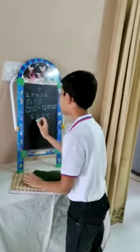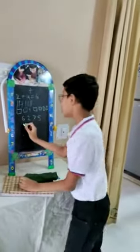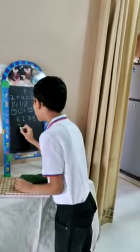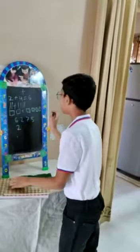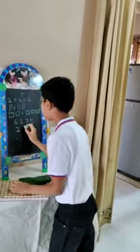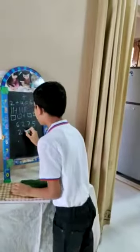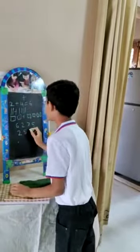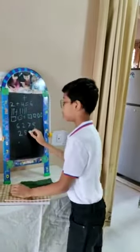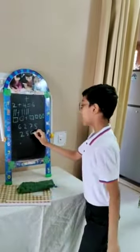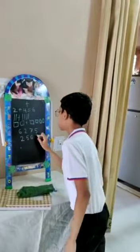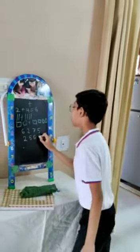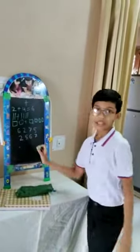The first smallest number is 2, then bigger than 2 is 5, bigger than 5 is 6, and bigger than 6 is 7. So the ascending order is 2, 5, 6, 7.